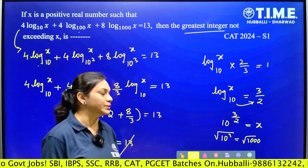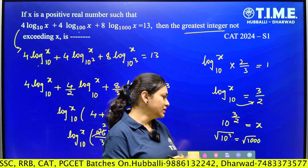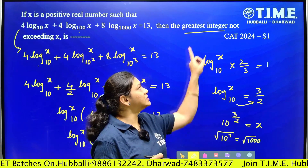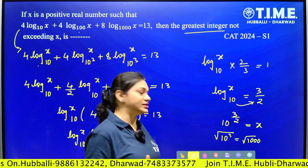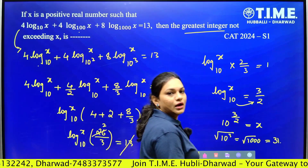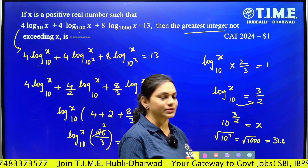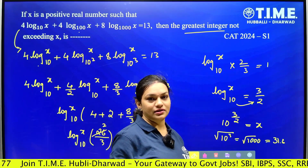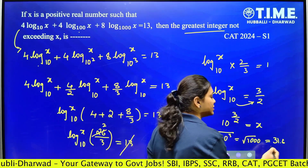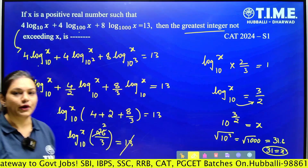So x = √1000. Now, 30 squared is 900 and 31 squared is 961, which is very near to 1000. Therefore √1000 is approximately 31.6 — it may be 31.5 or 31.6. Since the question asks for the greatest integer not exceeding x, the answer is 31. This is the final answer for this question. I hope it is clear.